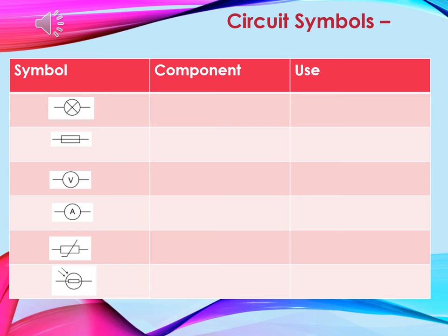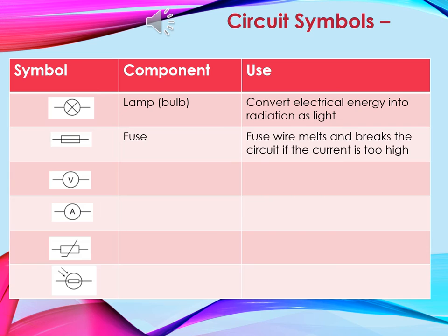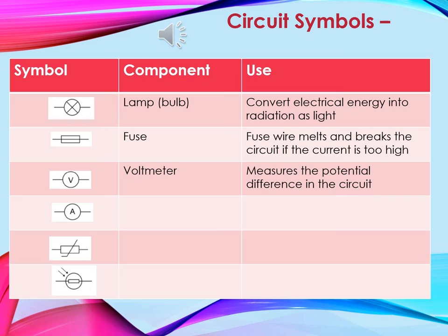These are what we call our common components. All you've got to do is the same idea — write down the symbol, the component and what its use is. The first one is a lamp or bulb and it converts electrical energy into radiation as light. After that we have a fuse. A fuse wire melts and breaks the circuit if the current is too high.